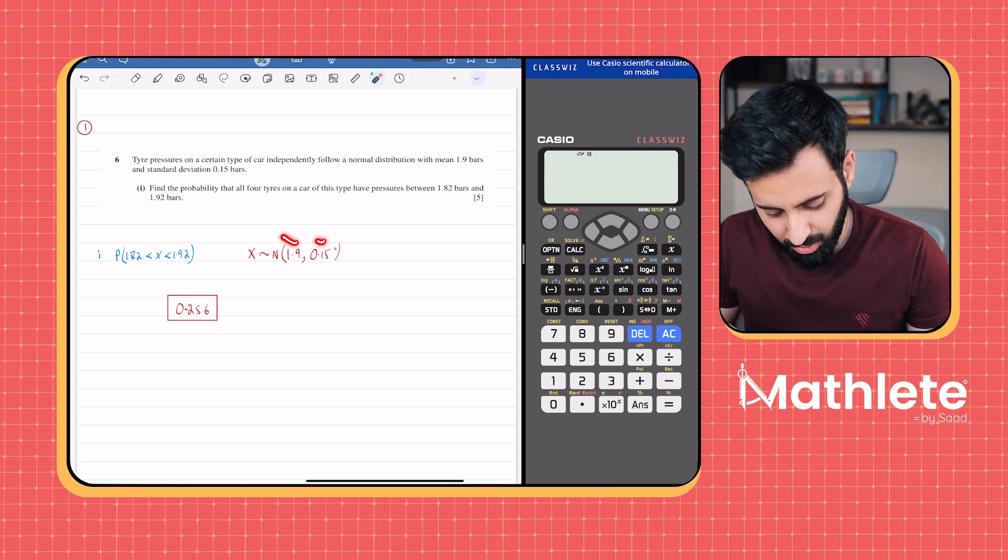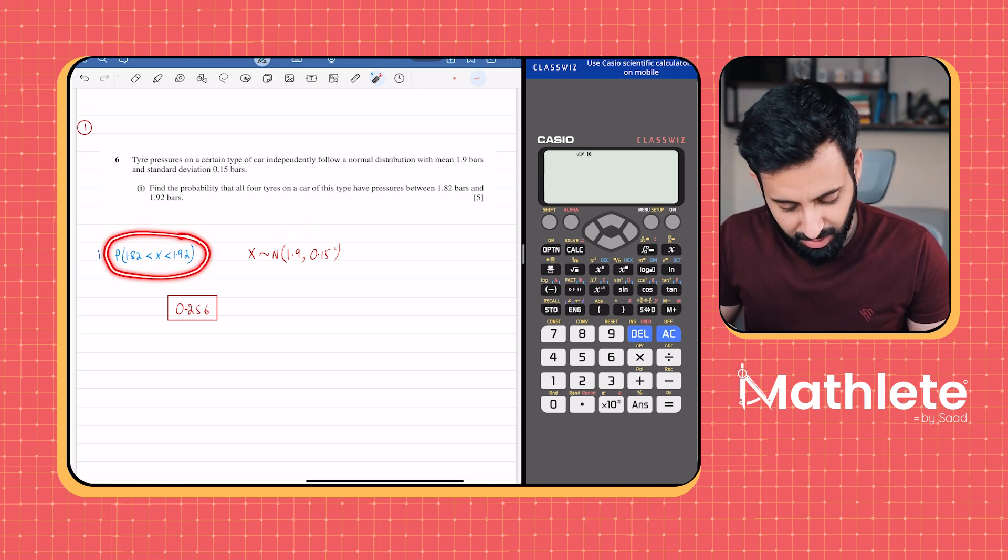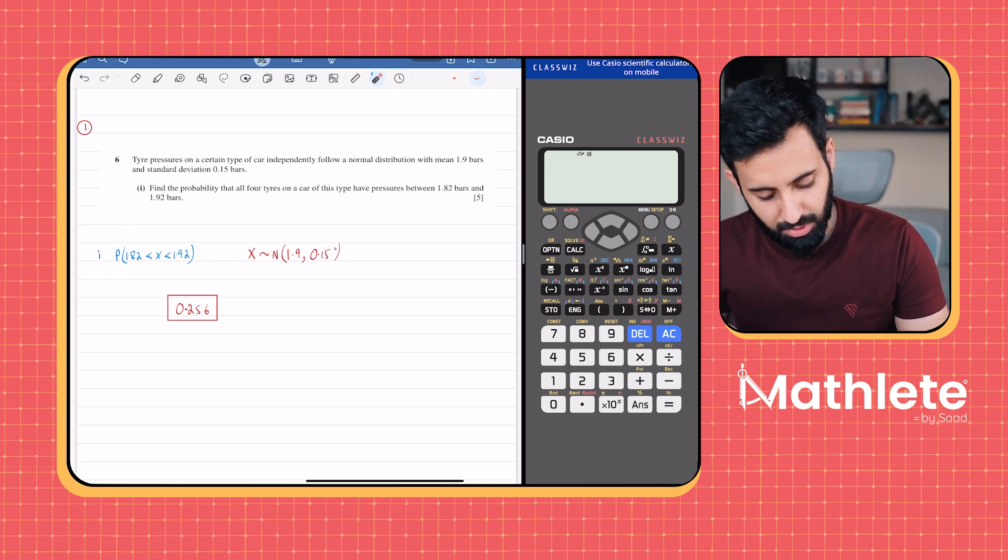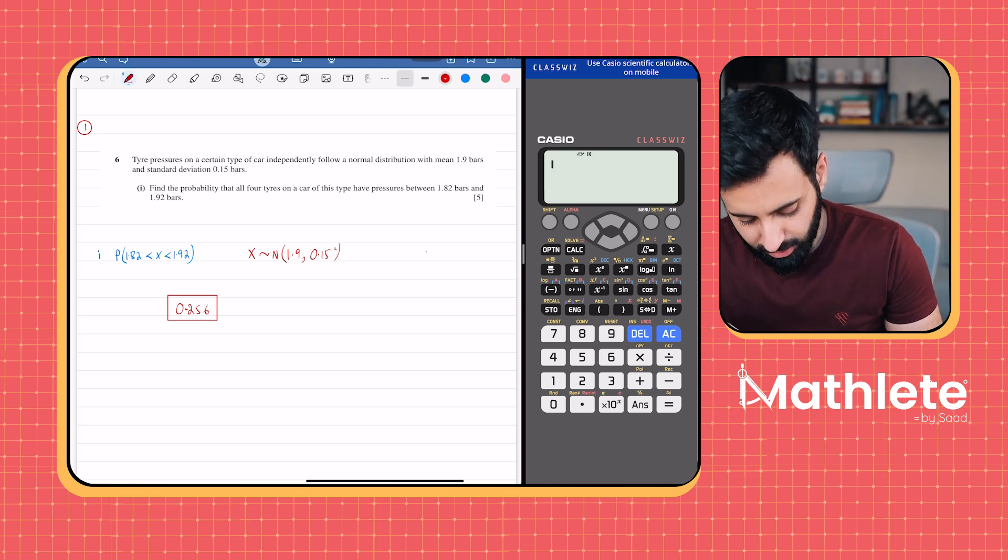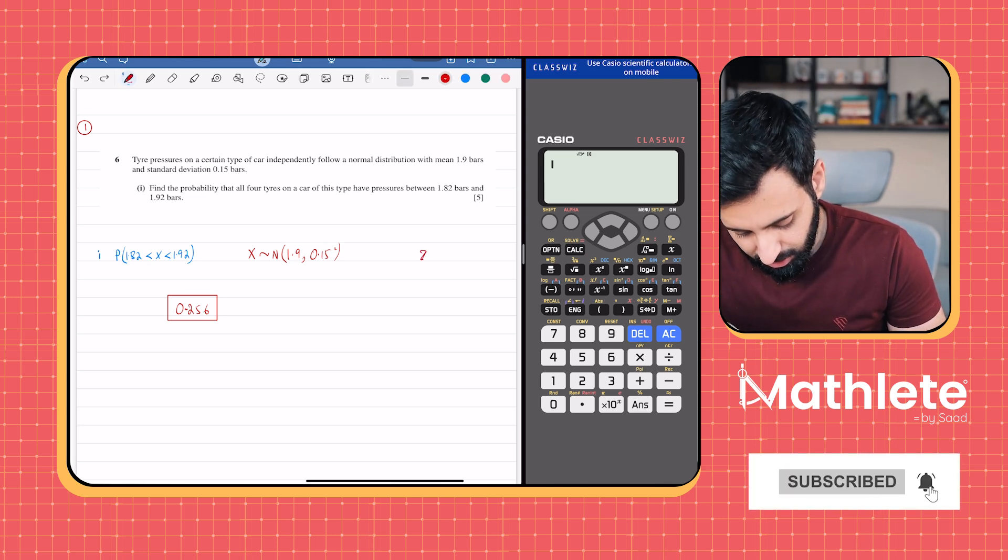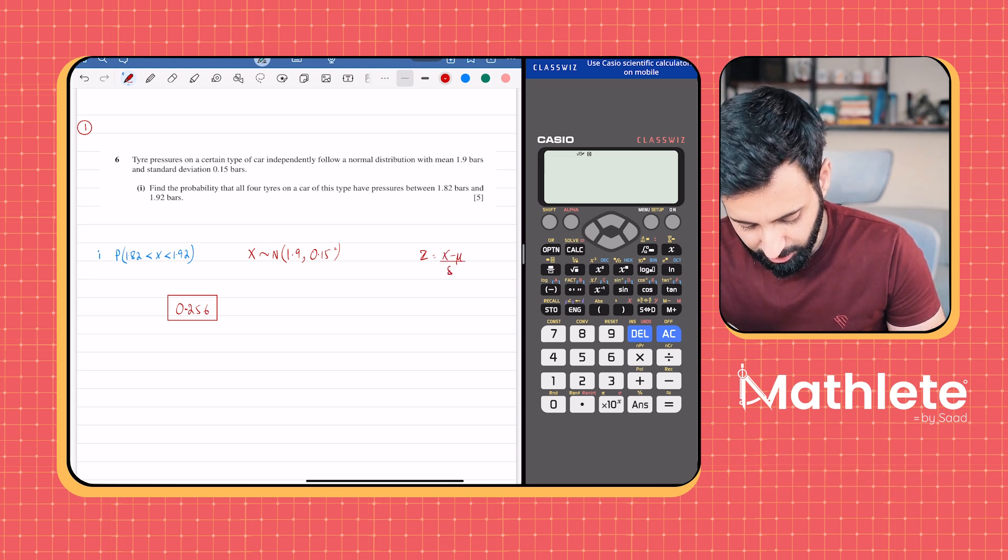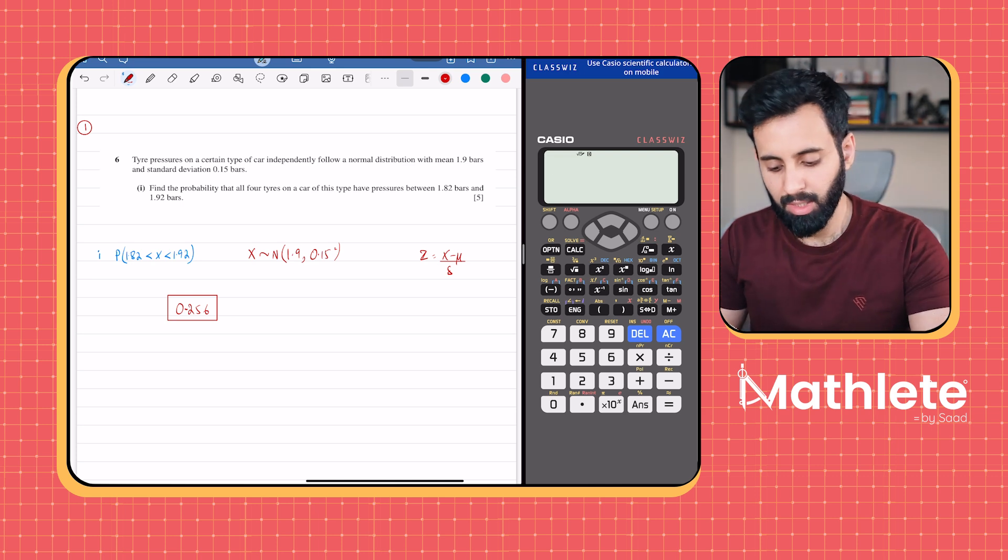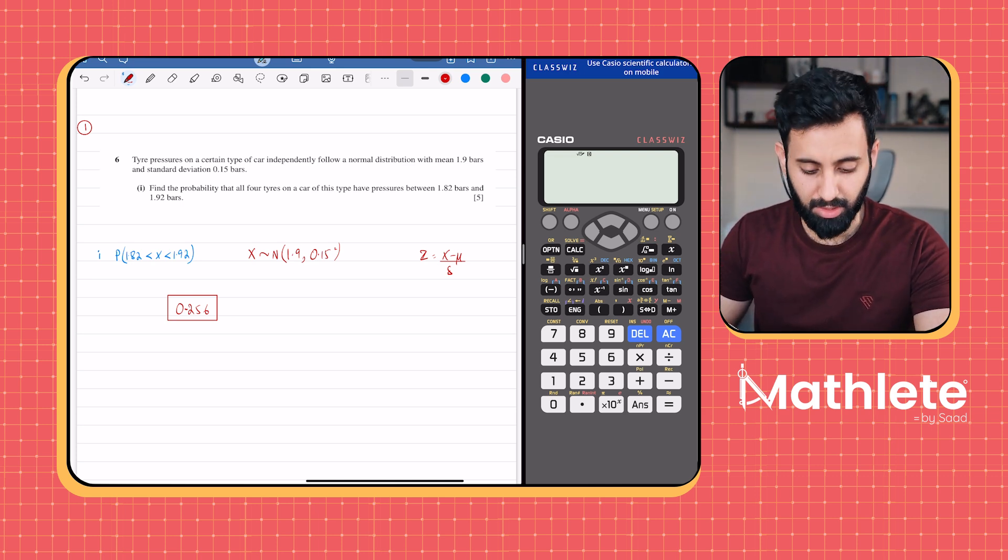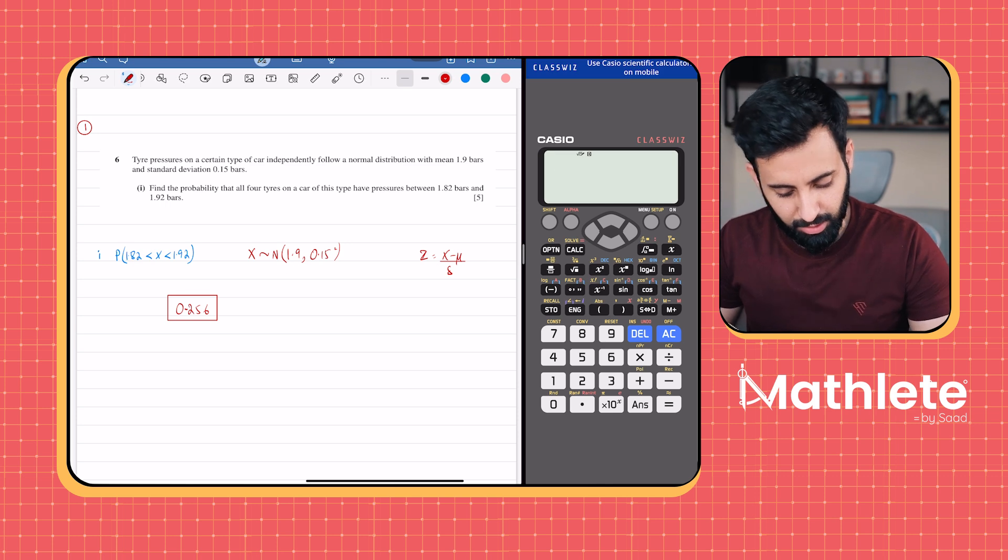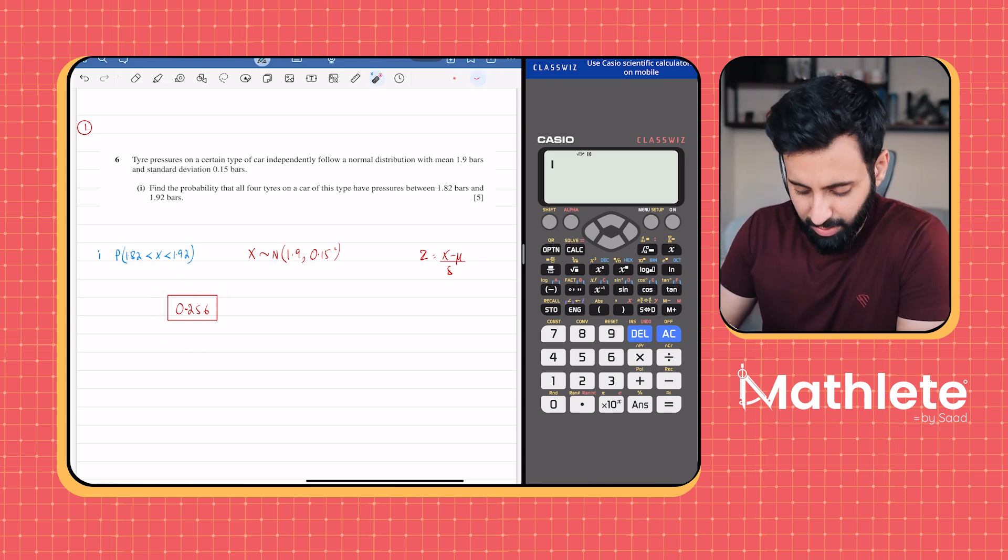So x is normally distributed. Here I've written the information - this is the mean and the variance. We're going to convert these x values to z values, find out the z scores by using the formula: z equals x minus mu upon sigma. Then we will basically use the table, the z table, and find out what the answer is. You still have to do that, and here I have written the answer so I can show you that you will get the correct answer when we use your calculator.